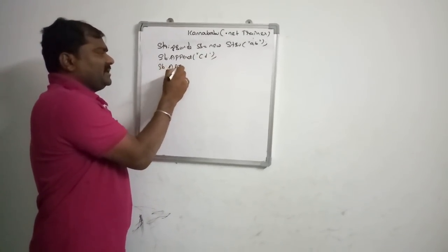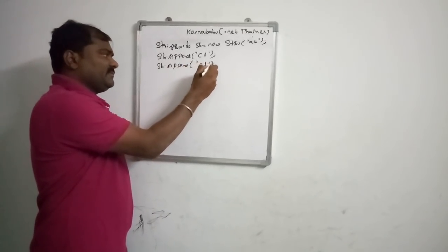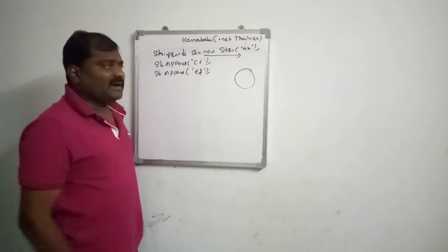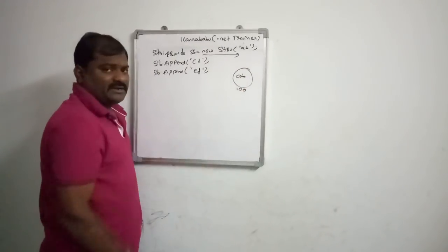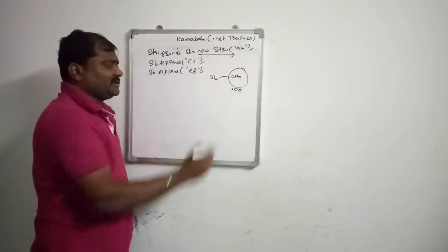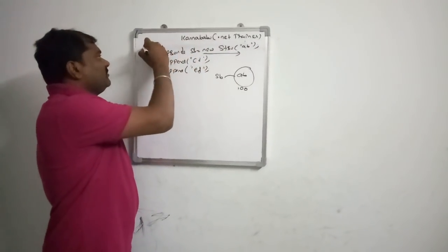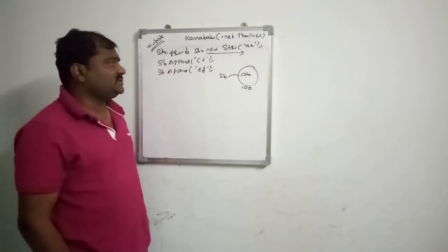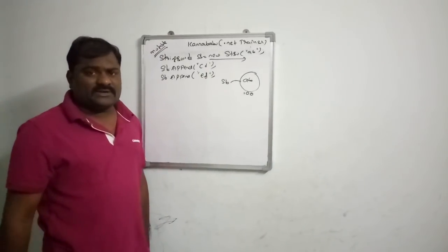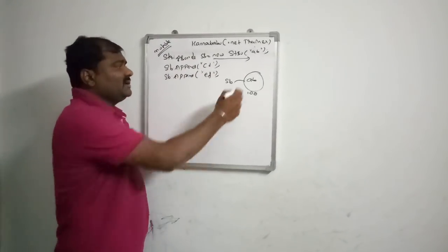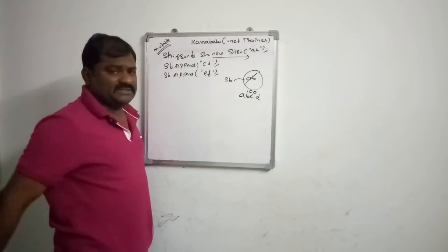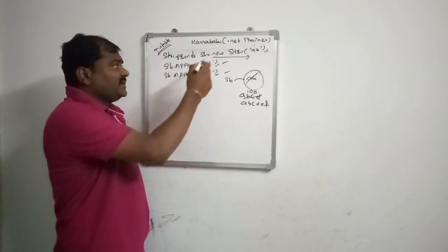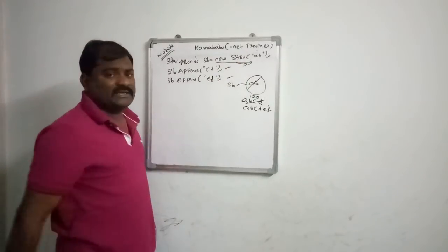Then sb.Append("ef"). In the first statement an object is created with value AB, address 100, and reference sb. StringBuilder is mutable — mutable means the value will change. So whenever you perform a concatenation operation, a separate object is not created; rather it will modify the existing object. So after appends the value becomes ABCD, then ABCDEF. Each time you print the hash code, it returns the same address.